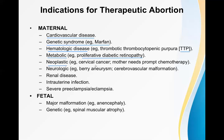Other maternal indications include neoplastic conditions such as cervical cancer, where the mother needs chemotherapy but chemotherapeutic agents are teratogenic to the developing baby. Neurological conditions like berry aneurysm or cerebrovascular malformation may rupture during pregnancy. Renal disorders, intrauterine infections like TORCH group infections, and severe preeclampsia or eclampsia (hypertensive disorders of pregnancy) are also maternal indications.